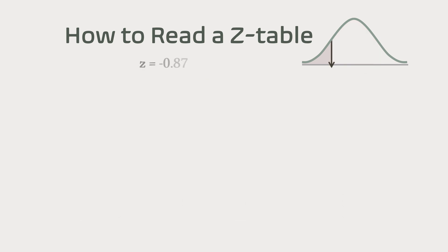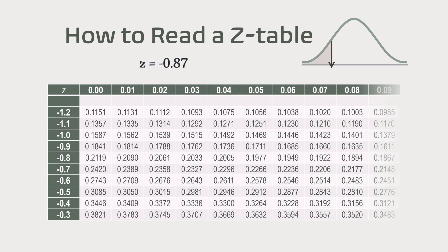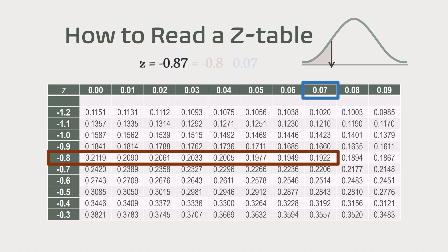Now, if your z-score is minus 0.87, go to the row labeled minus 0.8 on the negative side of the table. Move across to the column for 0.07. You'll find 0.1922, which means 19.22% fall below a z-score of minus 0.87.